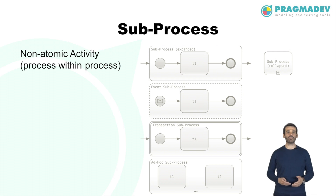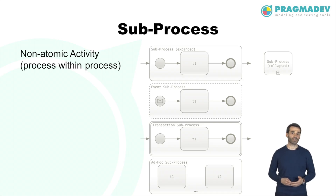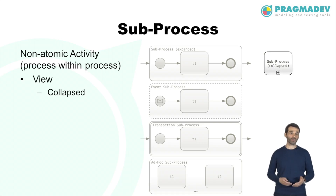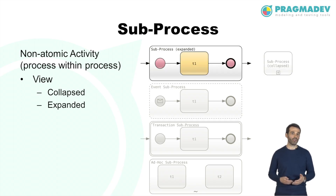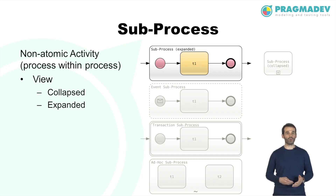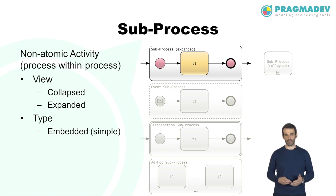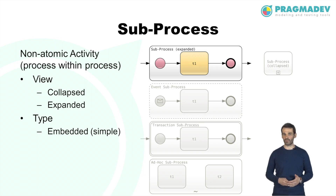A subprocess is an activity whose internal details have been modeled using activities, gateways, events, and sequence flows. It is a graphical object within a process, and can be shown in a collapsed view that hides its details or an expanded view that shows its details. There are different types of subprocesses. An embedded subprocess is part of the normal flow of the parent process, triggered by its incoming sequence flows.